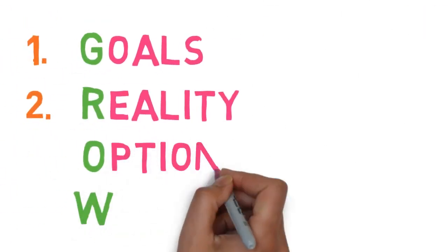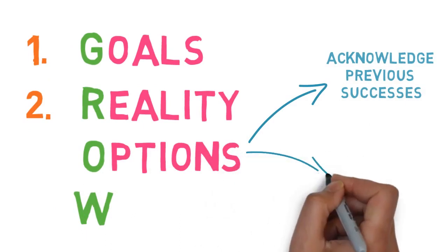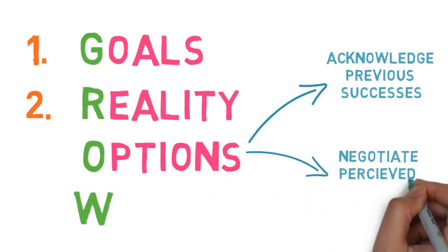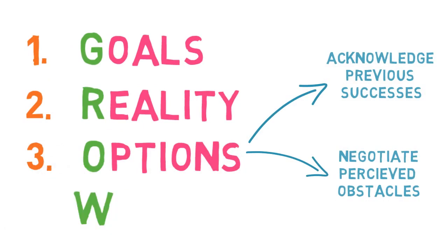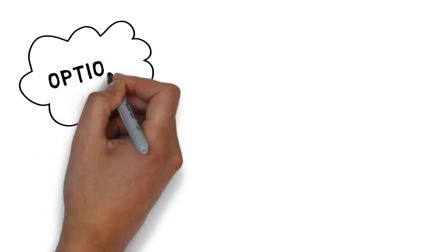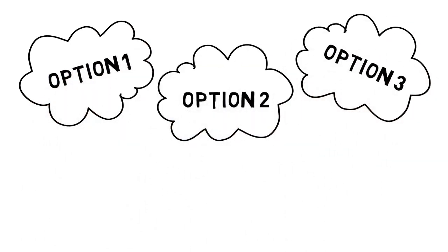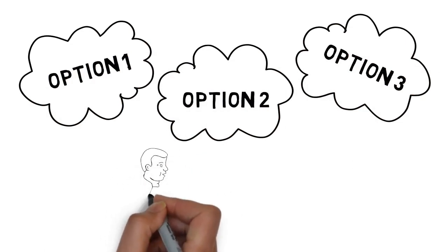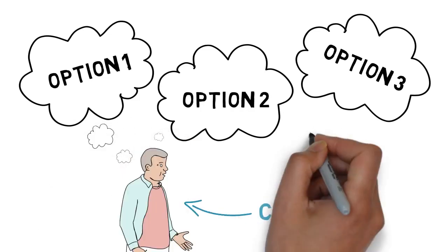Establishing options, particularly ones which acknowledge previous successes and may help the client negotiate any perceived obstacles, represents the next stage in the GROW model. It can be helpful to use this stage to generate a number of ideas without necessarily evaluating them too much. In line with the ideas explored in the previous video, the practitioner shouldn't here be providing the options, but rather be encouraging the client to elicit their own thoughts and feelings.